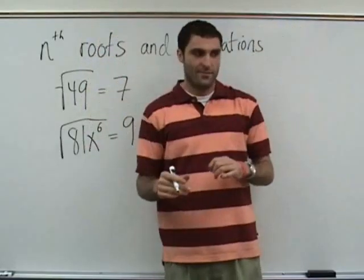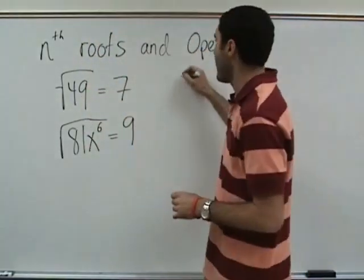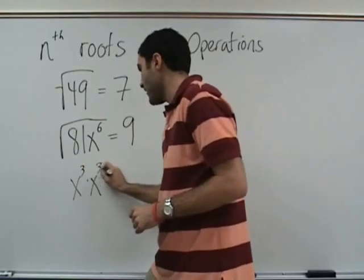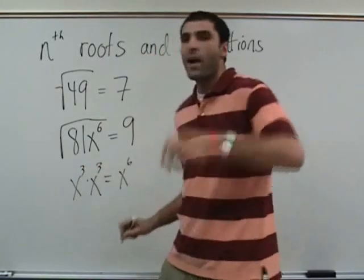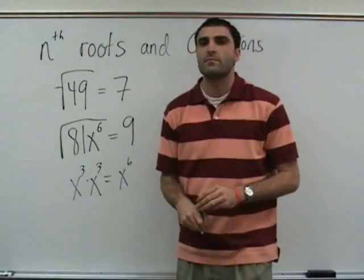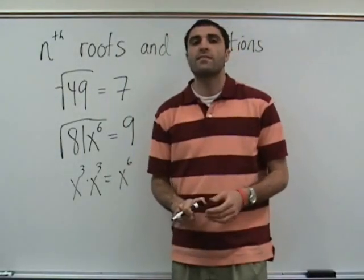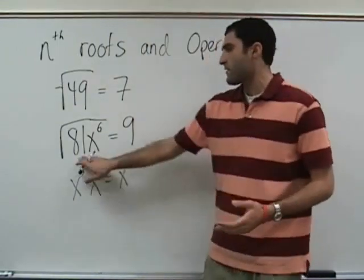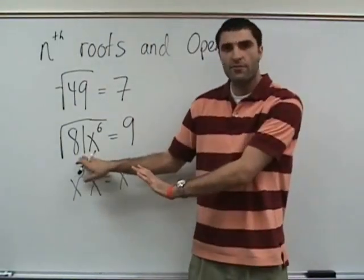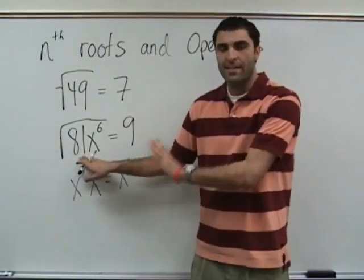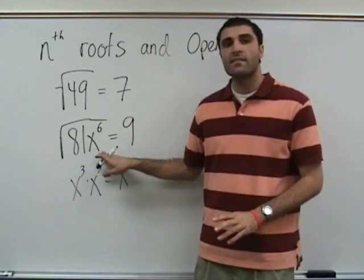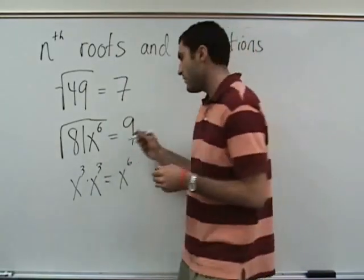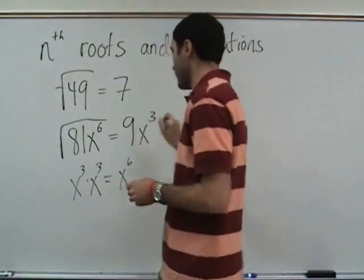X to the third times x to the third equals x to the sixth — you add the exponents. Square root of eighty-one is done by itself, so that's nine. Square root of x to the sixth done by itself — that's x cubed.